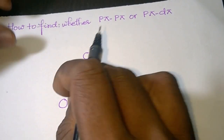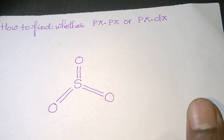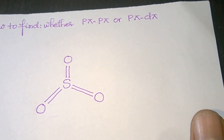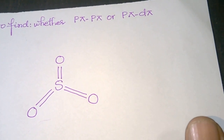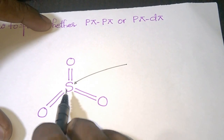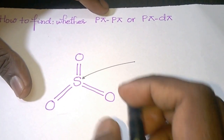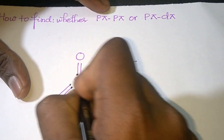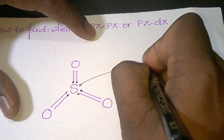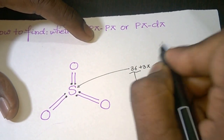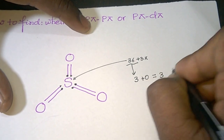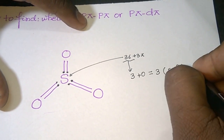Now, how to find whether SO3 contains p pi-p pi or p pi-d pi bonds, and how many such bonds are present. Step one is to find the hybridization of sulfur. Sulfur has 6 outermost electrons and is forming 6 bonds: 3 sigma bonds and 3 pi bonds. In the steric number we count only sigma bonds, so there are 3 sigma bonds and 0 lone pairs on sulfur — steric number 3, meaning SO3 sulfur is sp2 hybridized.